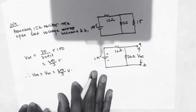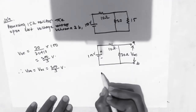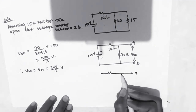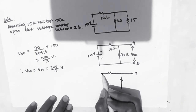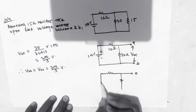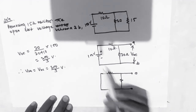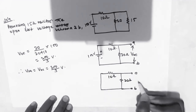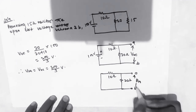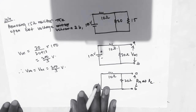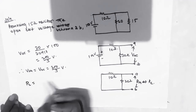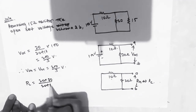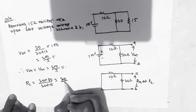Next we calculate the equivalent resistance RTS. For that, we remove the 100 volt source by short circuiting it. Now we have 10 ohm and 20 ohm resistors between terminals A and B. RTS, or REL, equals 10 and 20 in parallel: 20 into 10 upon (20 plus 10), which gives us 20 upon 3 ohms.